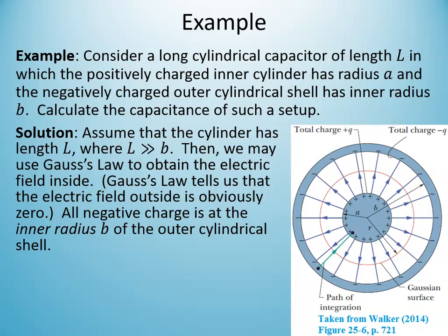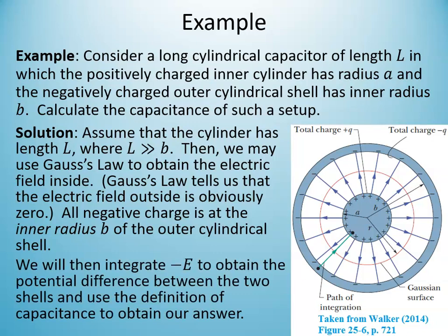We use Gauss's law to get an expression for the electric field, integration to find the electric potential difference between the plates, and then the definition of capacitance: charge divided by that potential difference. The charges always end up canceling, and you get your capacitance.